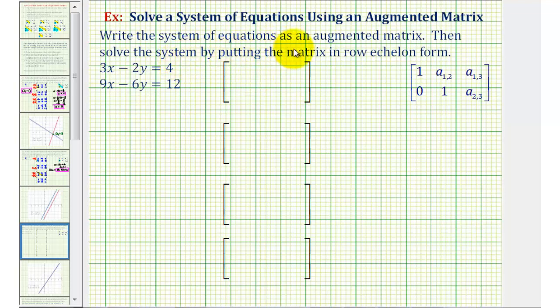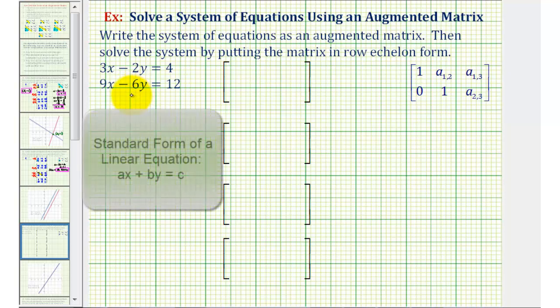We want to write the system of equations as an augmented matrix and then solve the system by writing the matrix in row echelon form. The first thing we should recognize is that we have a system of two linear equations with two unknowns. The equations are in standard form, which is the form we need to write the augmented matrix.